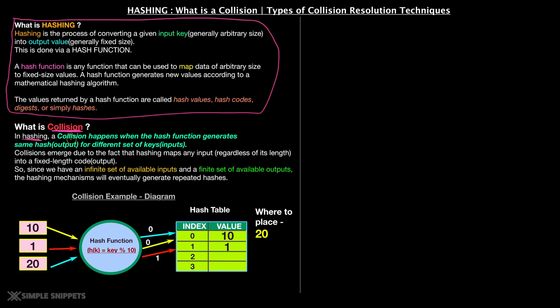So in hashing, a collision happens when the hash function generates same hash, that is same output, for a different set of keys, that is the input. So this scenario happens when you get two different inputs, you provide it into the hash function and you get the same output. This is what a collision is. Collision is where two outputs are same for two different set of inputs. So why does this happen?